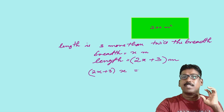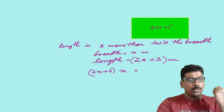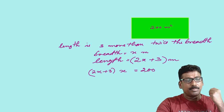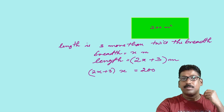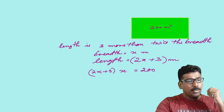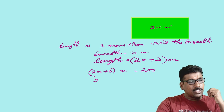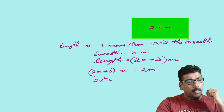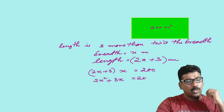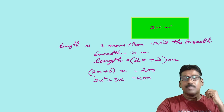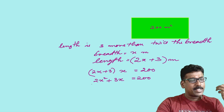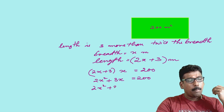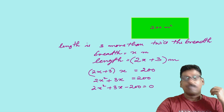This gives the area, but the area you know is 200. Now simplify it — multiply: 2x into x is 2x squared, plus 3 into x is 3x, is equal to 200. Now transpose 200 to one side. What will you get? 2x squared plus 3x minus 200 is equal to 0.